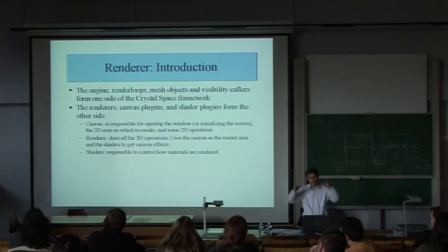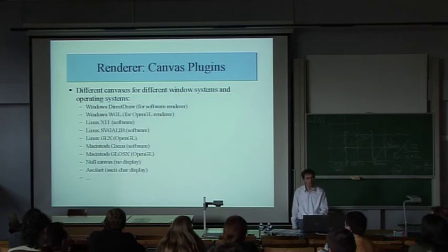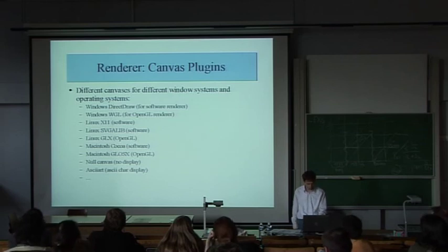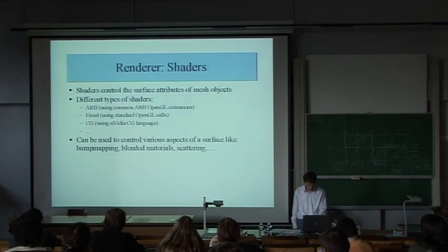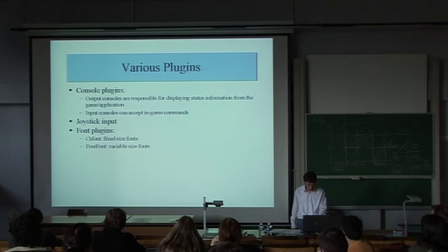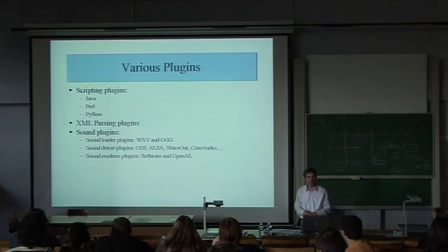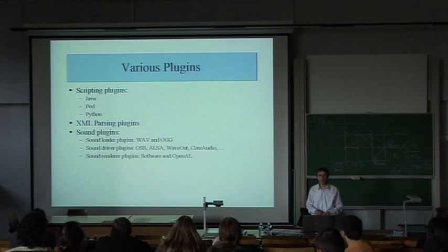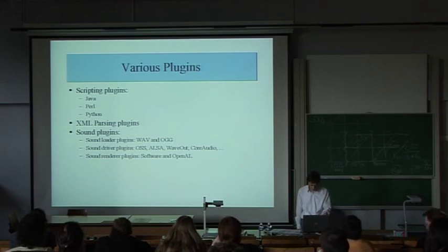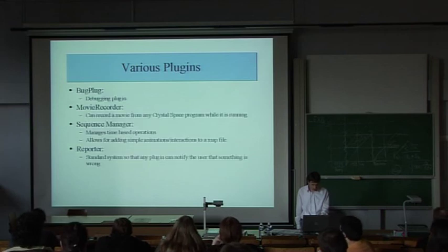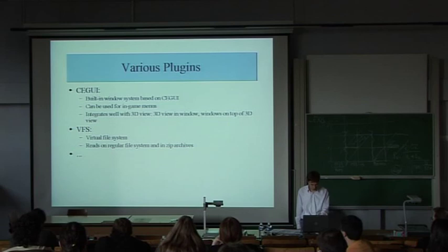Below the engine you have the renderers, responsible for sending data to the OpenGL system or to the software renderers. Crystal Space has a few hundred plugins: console, joystick support, font plugins, scripting plugins — which is very important. We actually support Java, Perl, and Python in Crystal Space, so you can write a full Crystal Space application in those languages as well as C++. Nearly the complete API is exposed. We also have XML parsing, sound plugins, movie recorders, sequence managers, reporters, a window system, and a virtual file system.